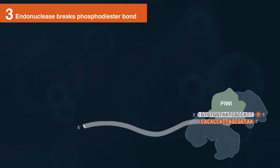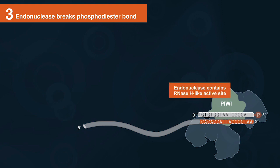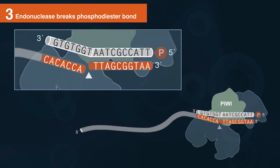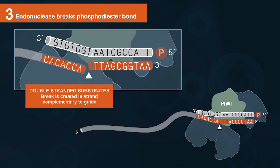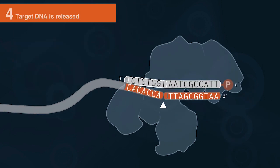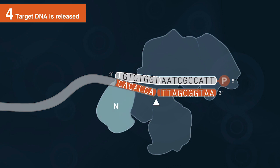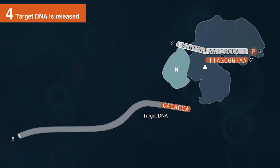This activates prokaryotic Argonaut endonuclease activity in the PIWI domain, which contains a metal-dependent RNase H-like active site. A break is created in the phosphodiester backbone of the complementary substrate nucleic acid. In the case of double-stranded substrates, a break is only created in the strand which is complementary to the guide nucleic acid. The N domain is thought to then act as a wedge that helps release the target DNA.